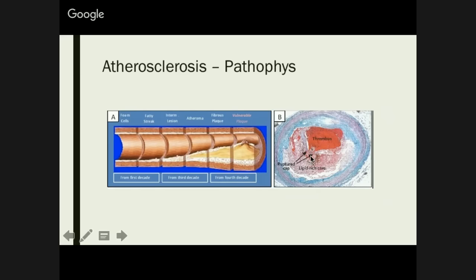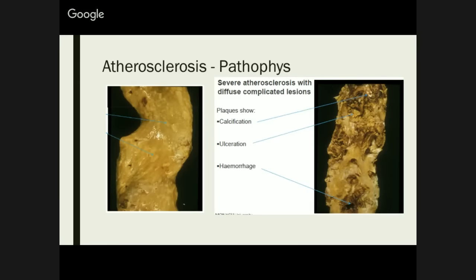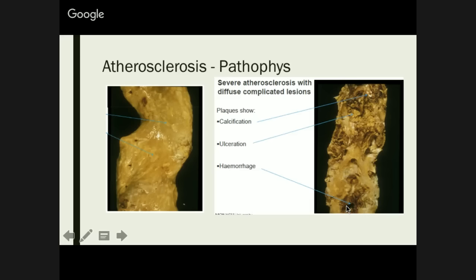This illustrates an atherosclerotic plaque that has had some sort of injury — whether ulceration or not — and resulted in a thrombus, pretty much blocking the entire artery. It could also be an injury to the actual plaque itself resulting in a thrombus and therefore blocking off your entire artery. Comparing a normal aortic wall versus one with severe atherosclerosis — you can see the calcification, ulceration, and darker areas resulting from haemorrhage.